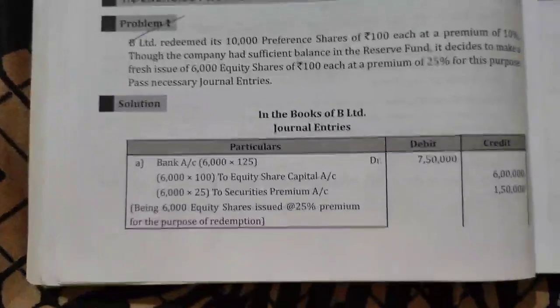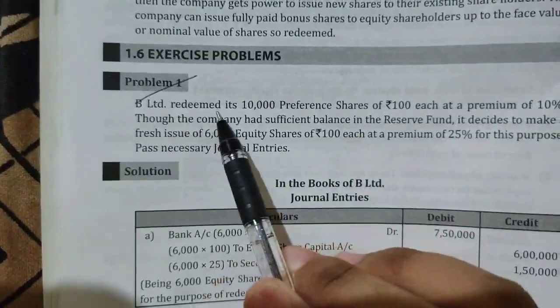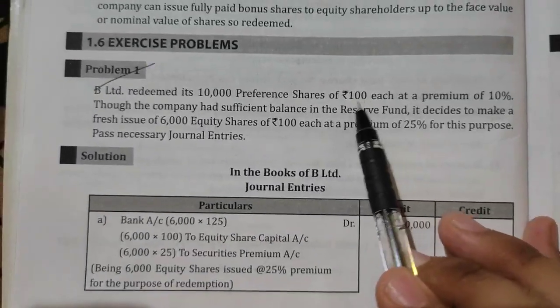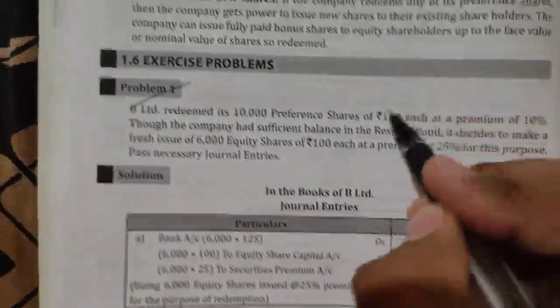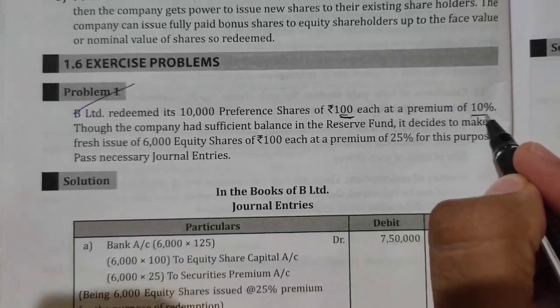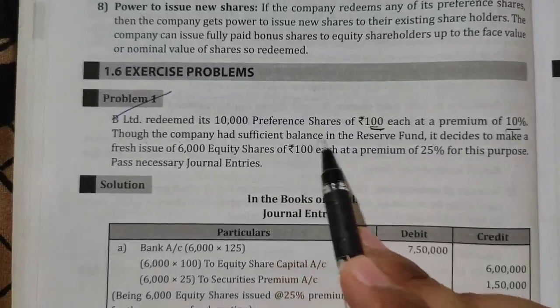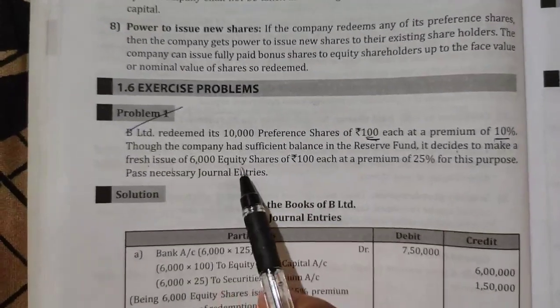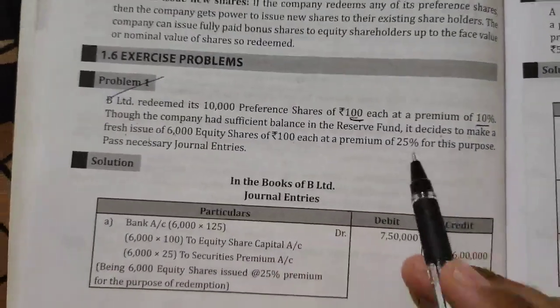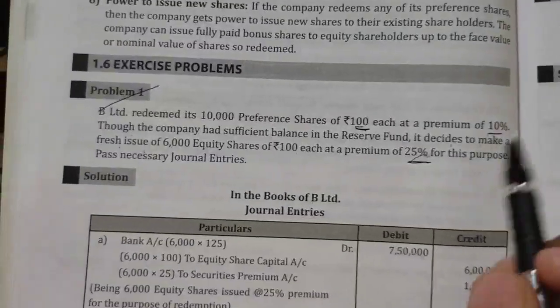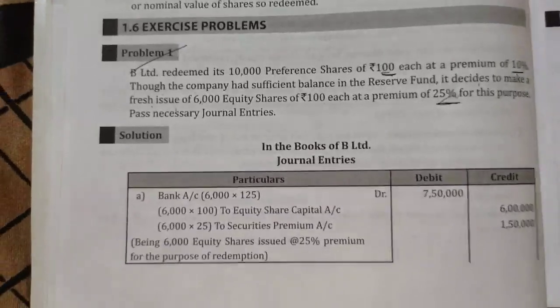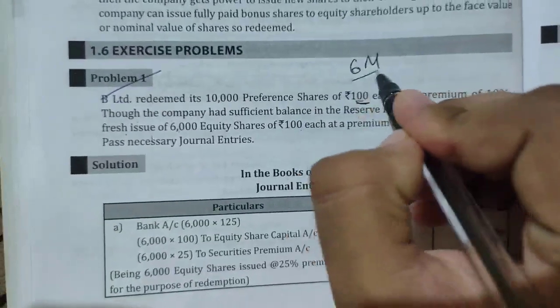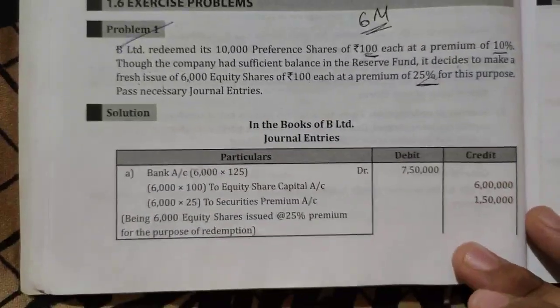Dear friends, welcome to Top Education. In this session we are doing problems on redemption of preference shares. The question: B Limited redeemed its 10,000 preference shares of rupees 100 each at a premium of 10%. The company had sufficient balance in the reserve fund and decided to make a fresh issue of 60,000 equity shares of rupees 100 each at a premium of 25% for this purpose. Pass the necessary general entries.